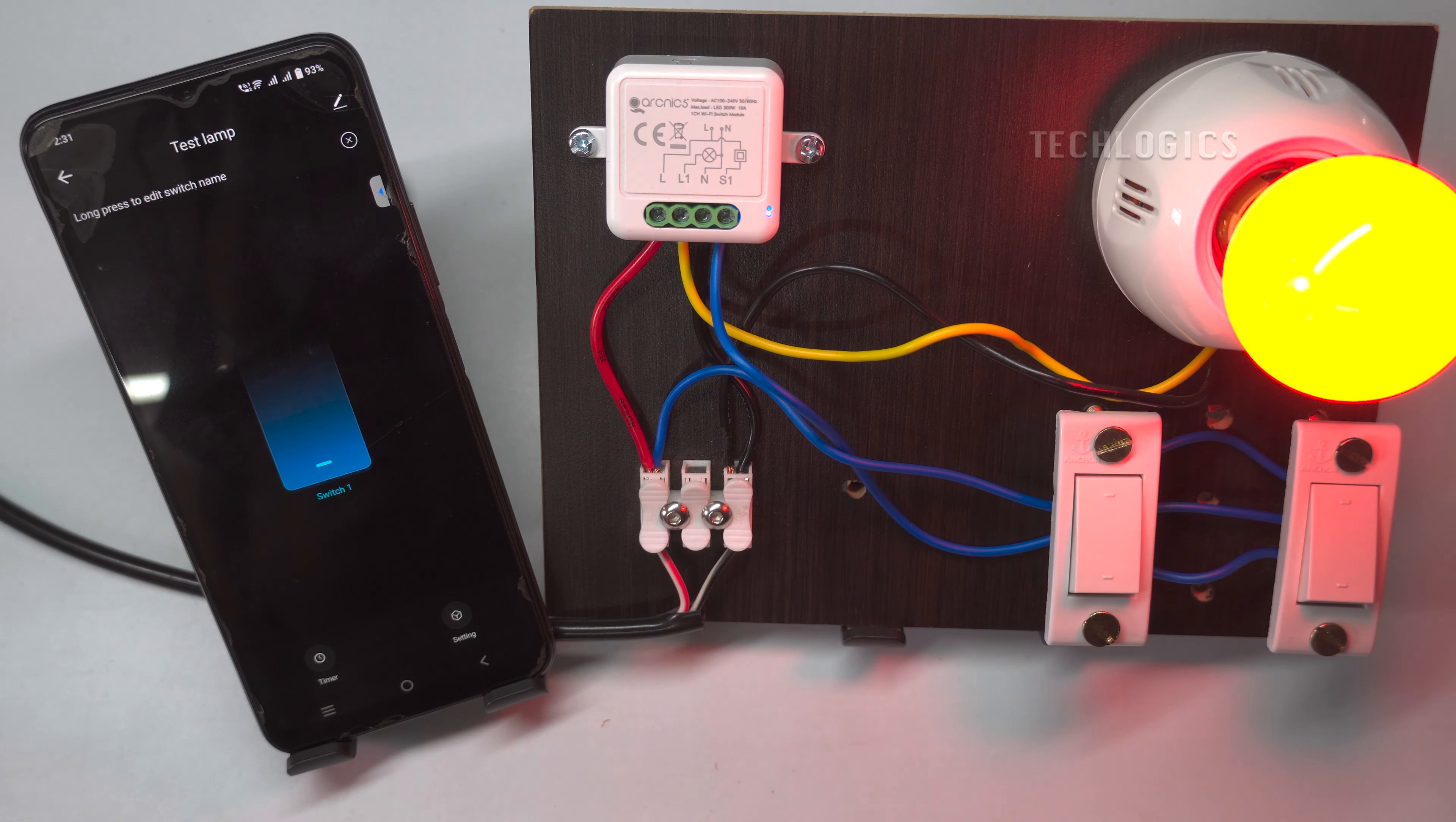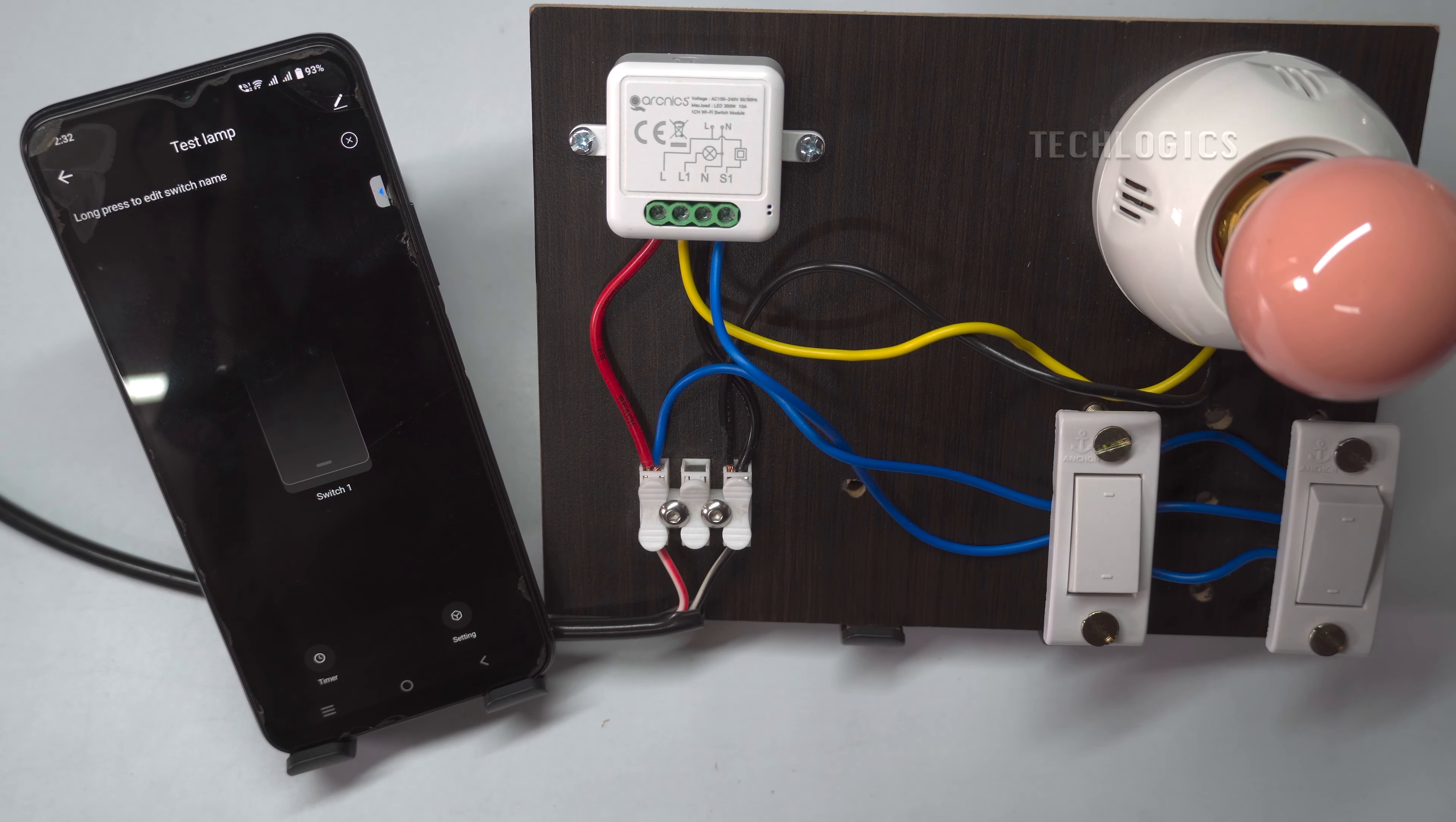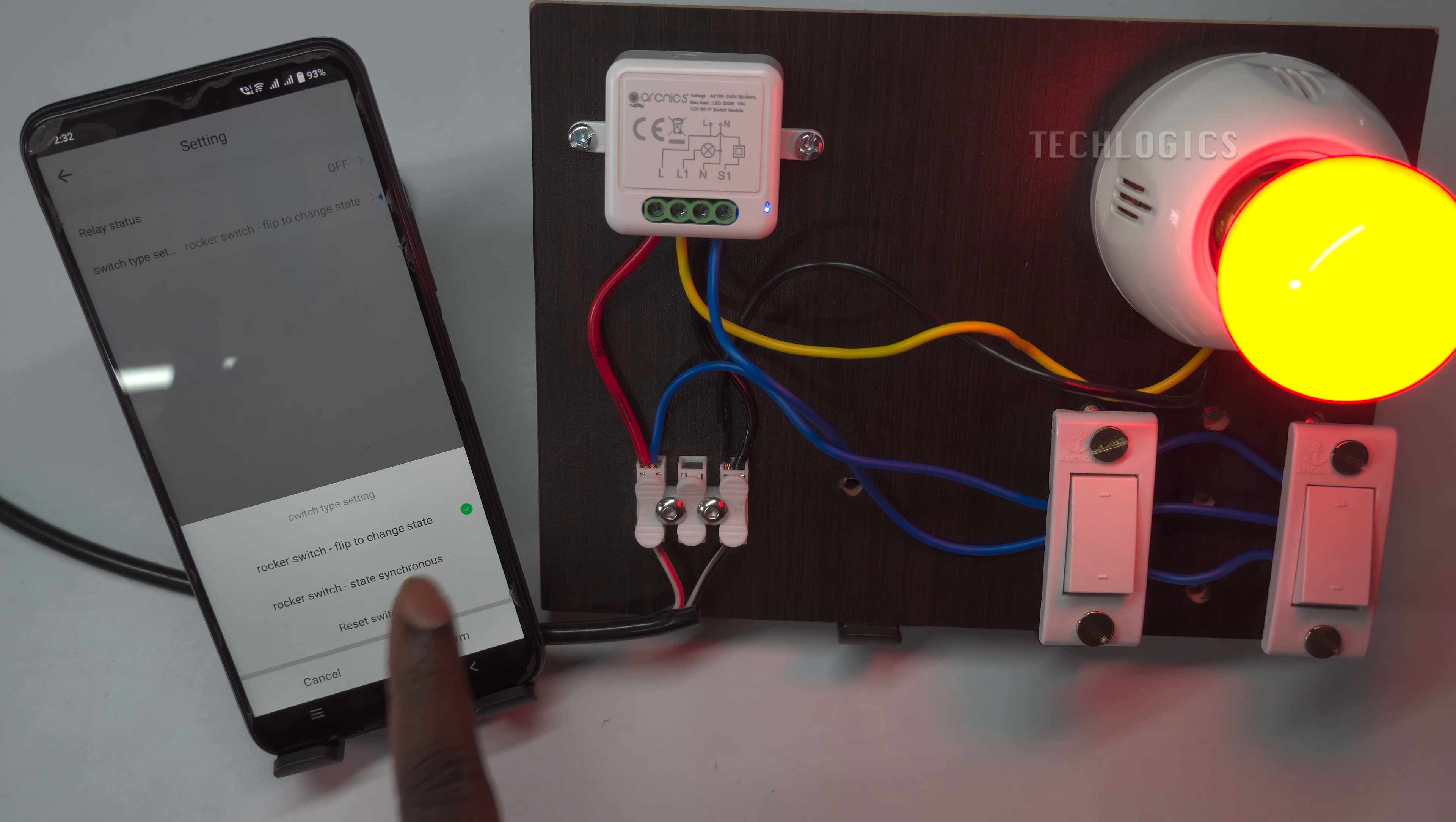These switches are capable of controlling both the on and off functions of the light, as well as from the mobile app. Ensure that the switch functions as shown in the app, or you can adjust the switch state according to your convenience.